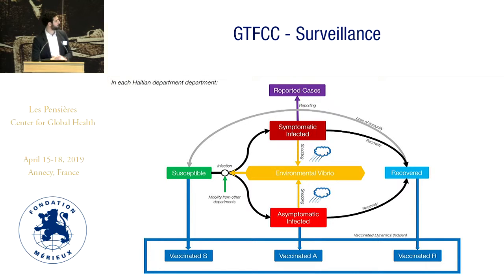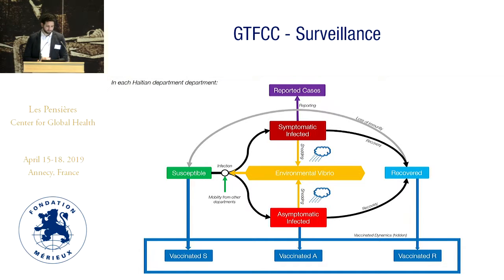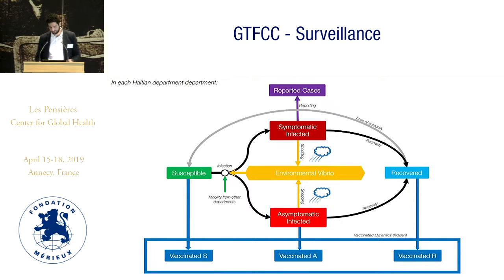In each department we have compartments, and reported cases is what we compare with the data — that's what we observe; the rest below is hidden. We have susceptible people who don't have immunity to cholera who can get infected through mobility from other departments or exposure to environmental Vibrio, and they become infected — symptomatic or not — shedding Vibrio in the environment. Then they recover for a certain period of time. I didn't show here the vaccinated dynamics for people who have been vaccinated.